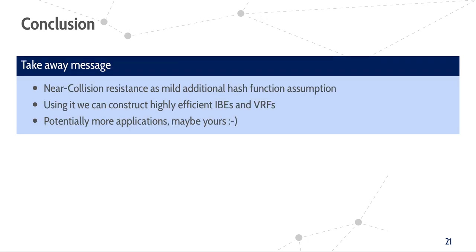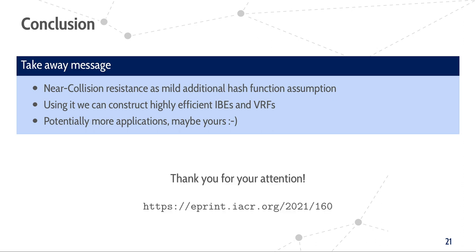The takeaway message of our work is that near-collision resistance as a mild hash function assumption can be used to replace the random oracle model methodology without sacrificing a lot of efficiency. We have shown that it can be used to construct highly efficient IBEs and VRFs, and perhaps there are more potential constructions. If you have any questions, feel free to drop us an email or refer to the paper. Thank you for your attention and have a nice day.